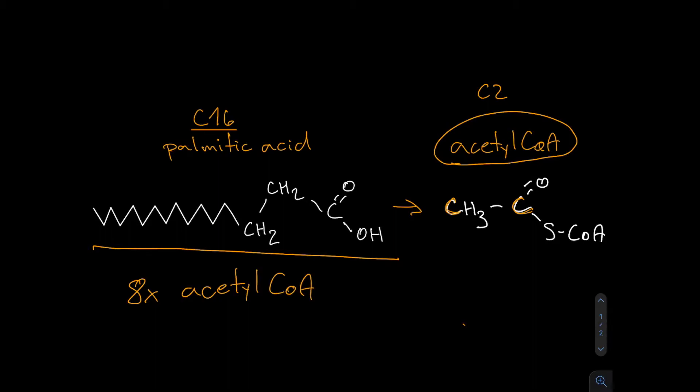If we are getting eight times acetyl coenzyme A and every spin of the cycle shorts the previous palmitic acid by two carbons in the form of acetyl coenzyme A, we have to short it seven times to get eight acetyl coenzyme A. So this cycle runs seven times, and during each cycle we are getting one NADH and one FADH2. So we are getting seven times NADH and seven times FADH2.